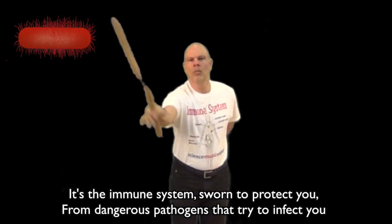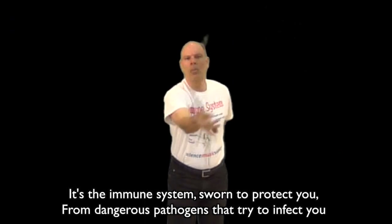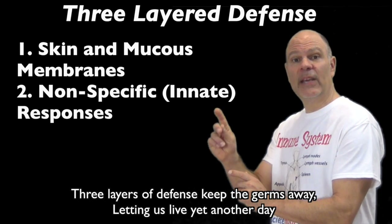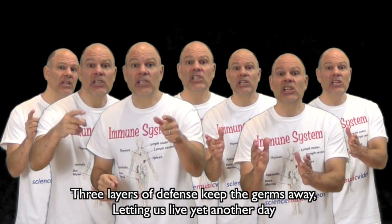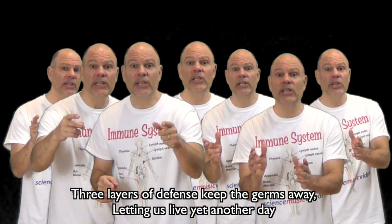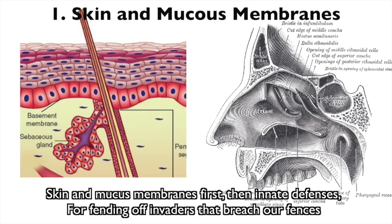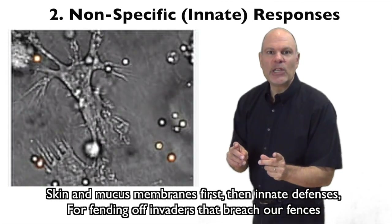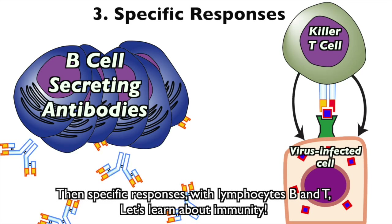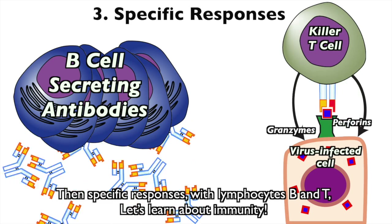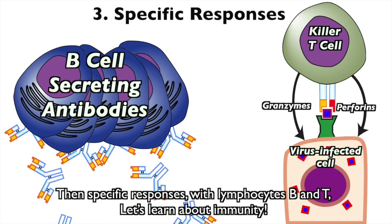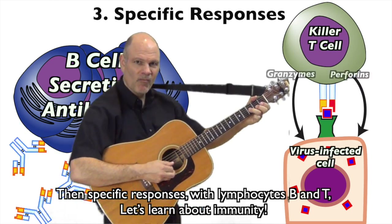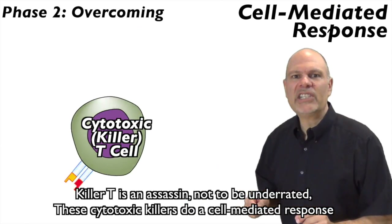It's the immune system, sworn to protect you from dangerous pathogens that try to infect you. Three layers of defense keep the germs away, letting us live yet another day. Skin and mucus membranes first, then innate defenses, fending off invaders that breach our offenses. Then specific responses with lymphocytes B and T — let's learn about immunity.